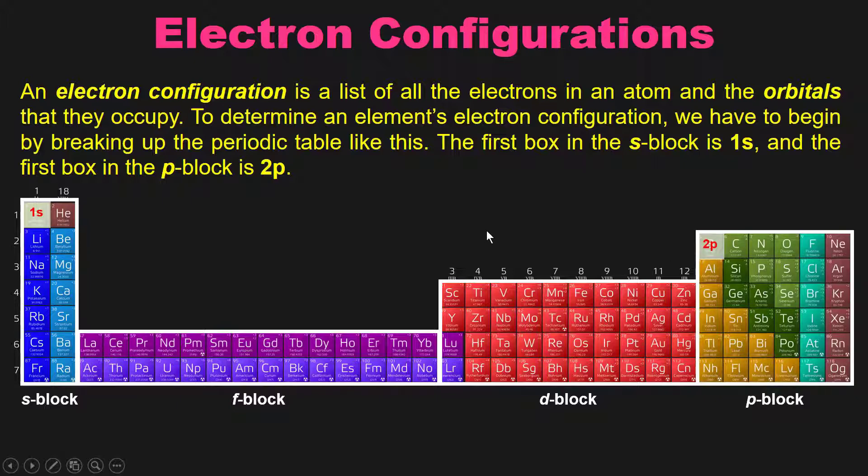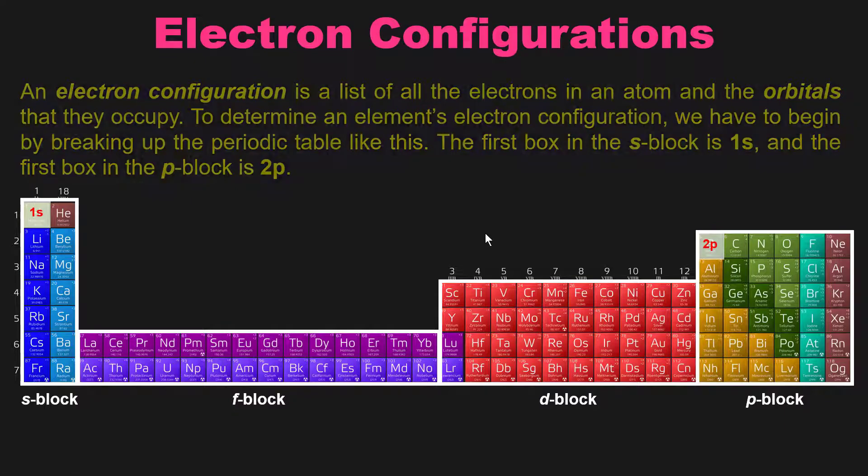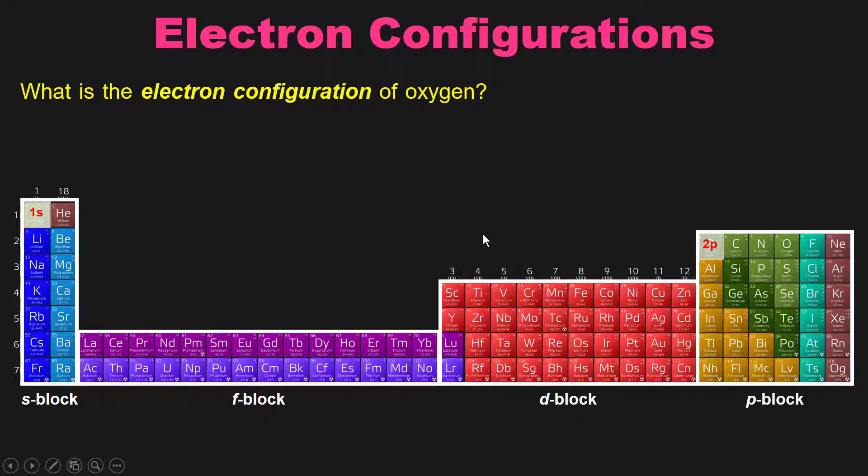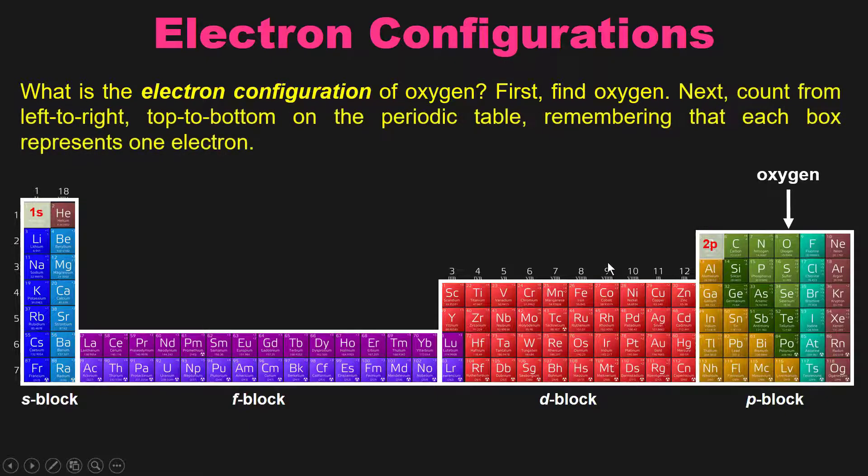Let's put our knowledge to the test by answering this question. What is the electronic configuration of oxygen? So to answer this, we first of all have to find oxygen on the periodic table. You'll notice that it's located right over here in box 8. We then have to count from left to right, starting at the top and working our way down one row at a time on the periodic table, remembering that each box represents one electron. We do that starting at hydrogen and moving forward until we get to our target goal, oxygen.